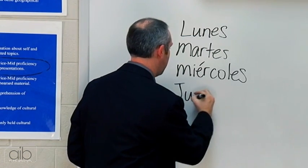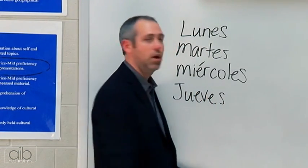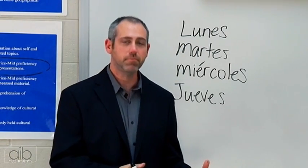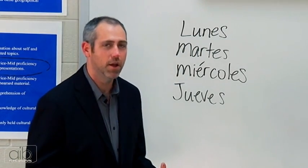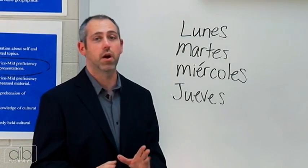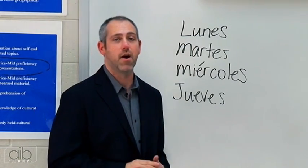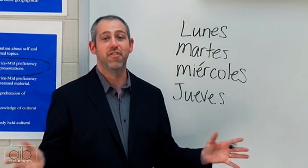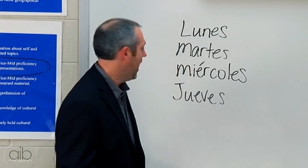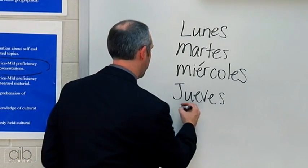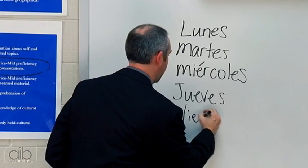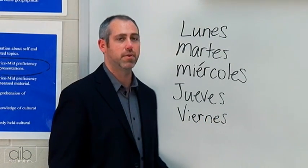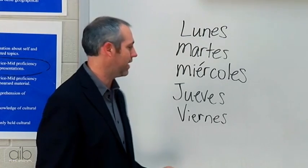The next one is Jueves — remember how that J sounds? Jueves. And Jueves was the day where they honored Jove, or Jupiter as we would know him now. In Roman mythology, he was the father and king of the gods. And then we move into Friday, which is Viernes. Remember that V sounds almost like a B. Viernes.